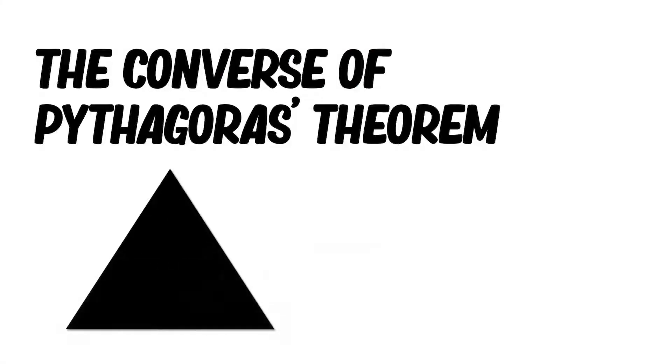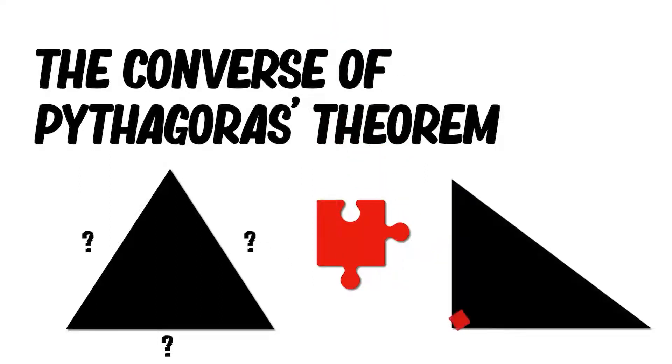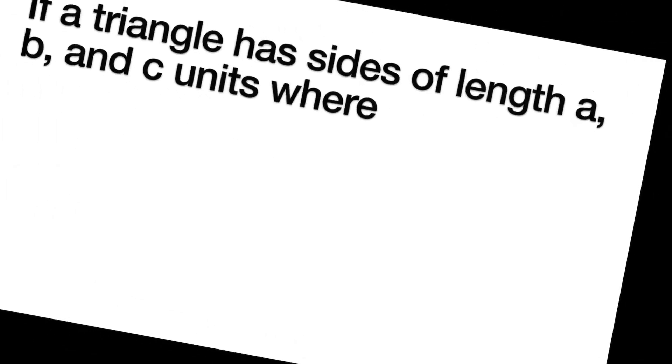So if we're given a triangle with three sides, we can use the converse of Pythagoras' theorem to find out a simple test to see if the triangle is a right triangle, if it has a right angle. So let's have a look at this then.